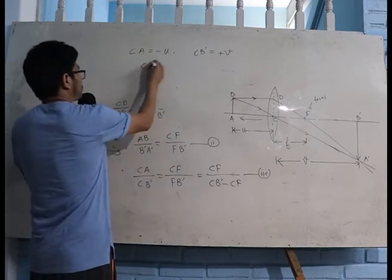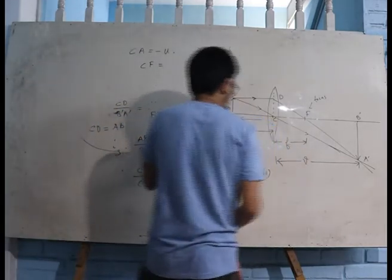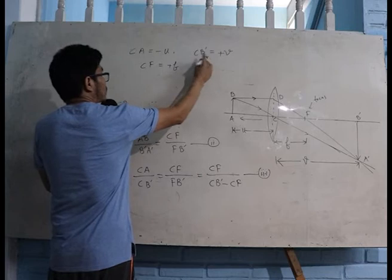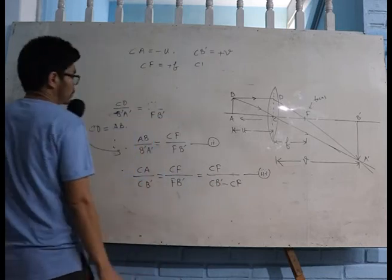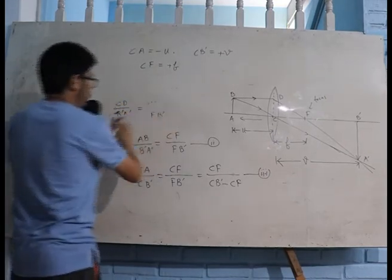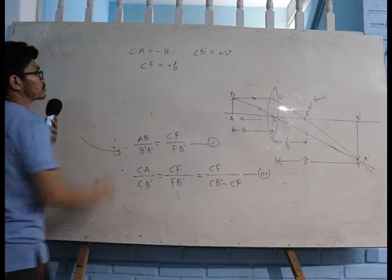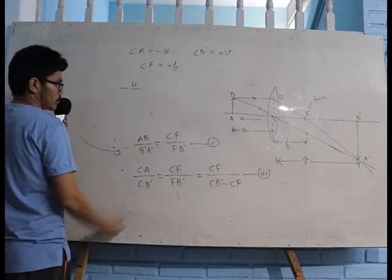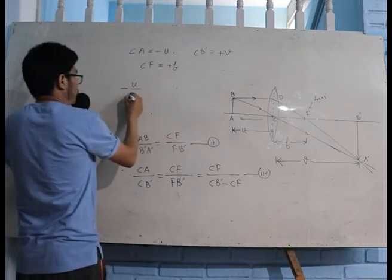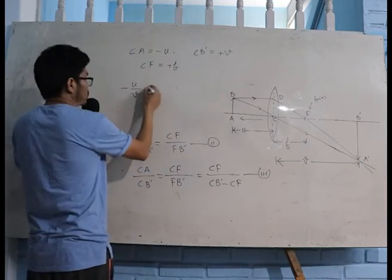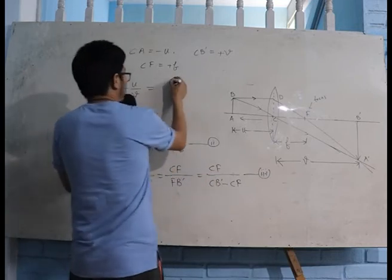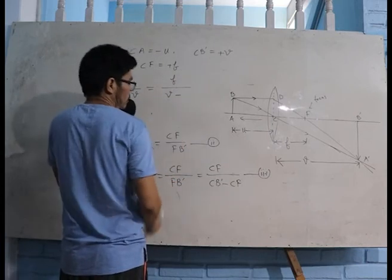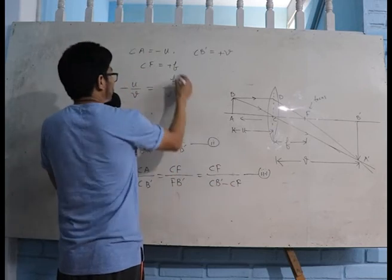CF is equal to f, which is again positive. Now substituting all these values in the equation: CA becomes minus u, CB' becomes v, CF becomes f. So the equation becomes: minus u divided by v equals f divided by v minus f.